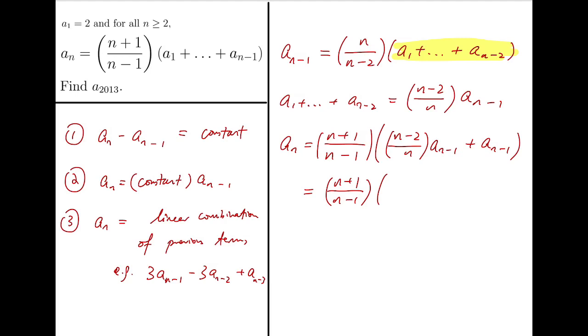The terms inside the bracket will become (2n-2) over n times a_{n-1}, and simplify we will have 2 times (n+1) over n times a_{n-1}, which looks much nicer than our original equation.